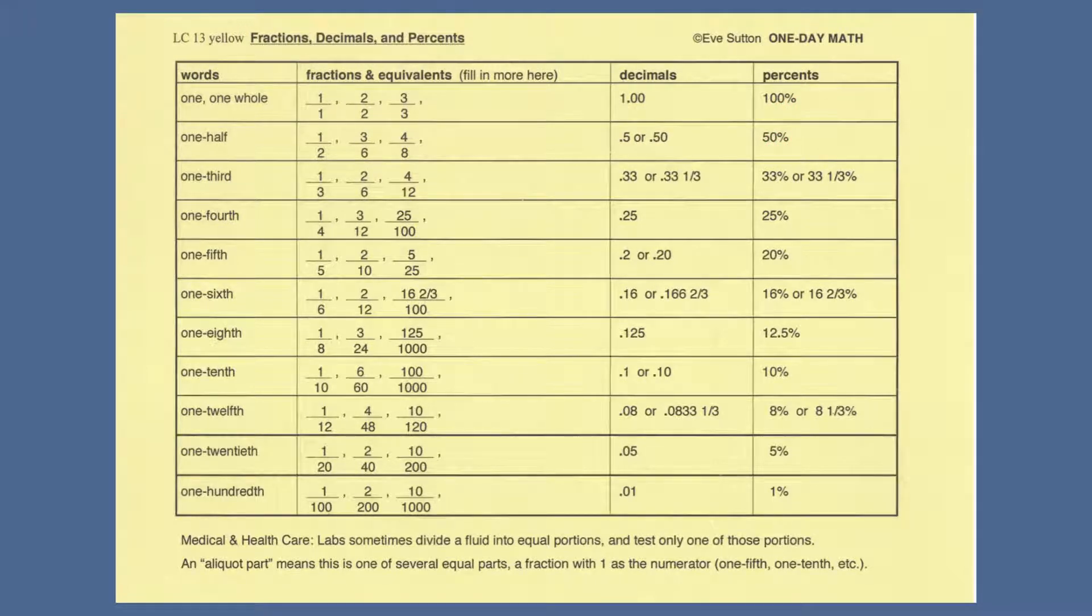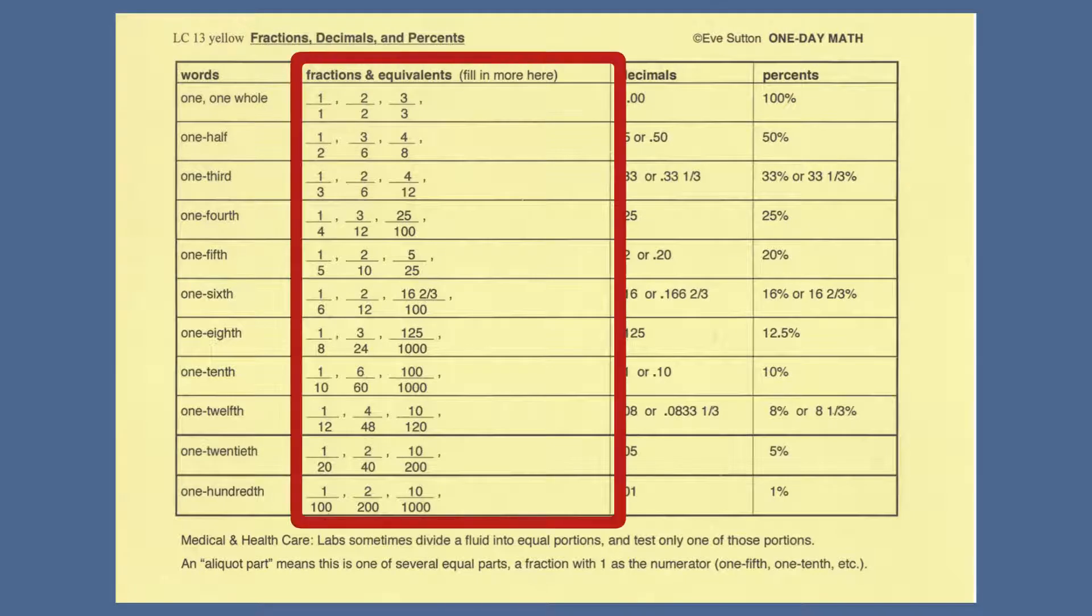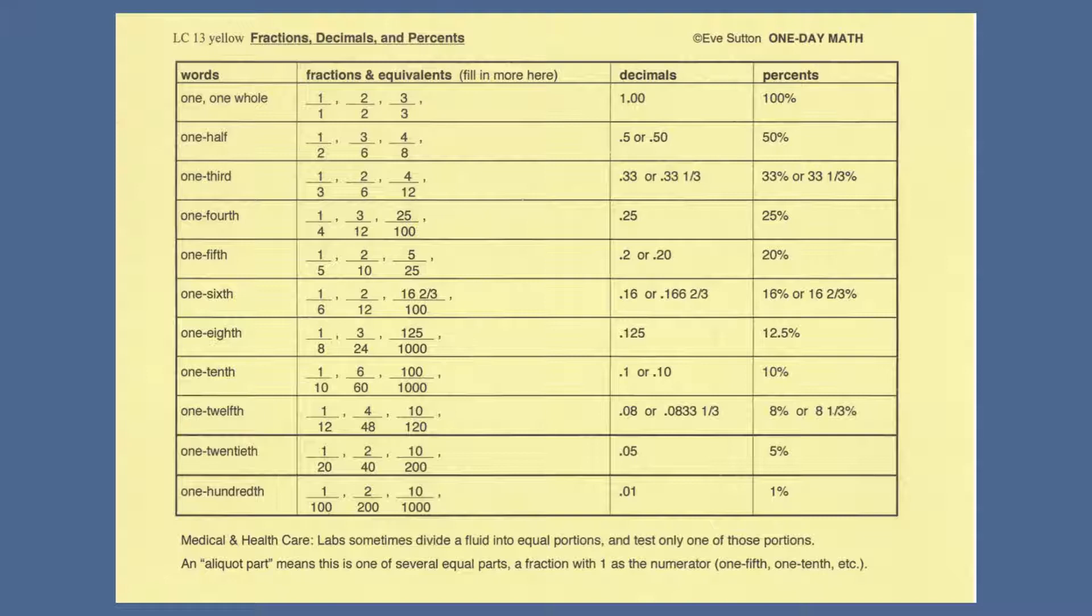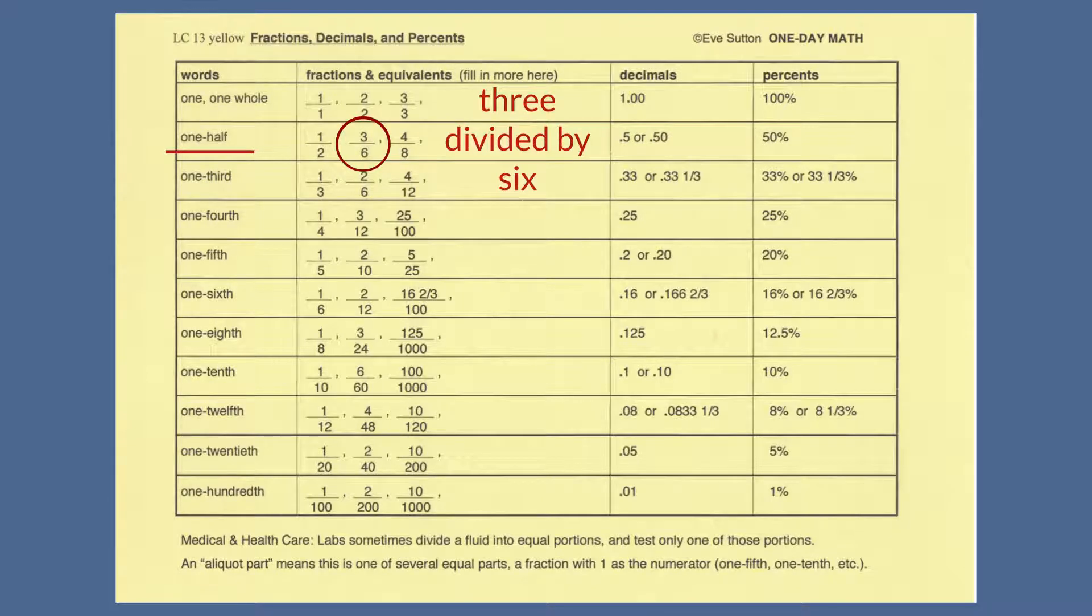When the number is written as a numerator and denominator, the horizontal bar can be read as divided by or out of. For example, all these expressions are equal to one-half: three-sixths, three divided by six, and three out of six.